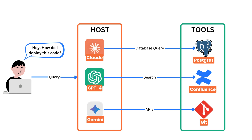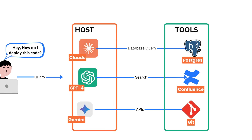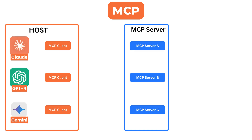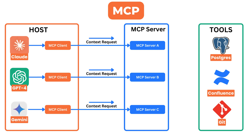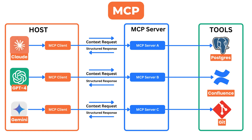MCP comes in and says: let's standardize this. Instead of each AI assistant having to build its own pipeline, MCP provides a universal way to request and fetch relevant context. It's got a client-server architecture where AI apps talk to an MCP client, the MCP client sends the request to an MCP server, the MCP server fetches data from wherever — GitHub, Postgres, APIs — and then a structured response is sent back to the AI model. Basically, instead of a dozen scattered approaches, MCP gives you one standard way to handle context for AI.